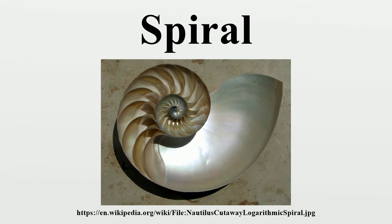Spirals and helices. Two major definitions of spiral in a respected American dictionary are: a) a curve on a plane that winds around a fixed center point at a continuously increasing or decreasing distance from the point; b) a three-dimensional curve that turns around an axis at a constant or continuously varying distance while moving parallel to the axis — a helix.